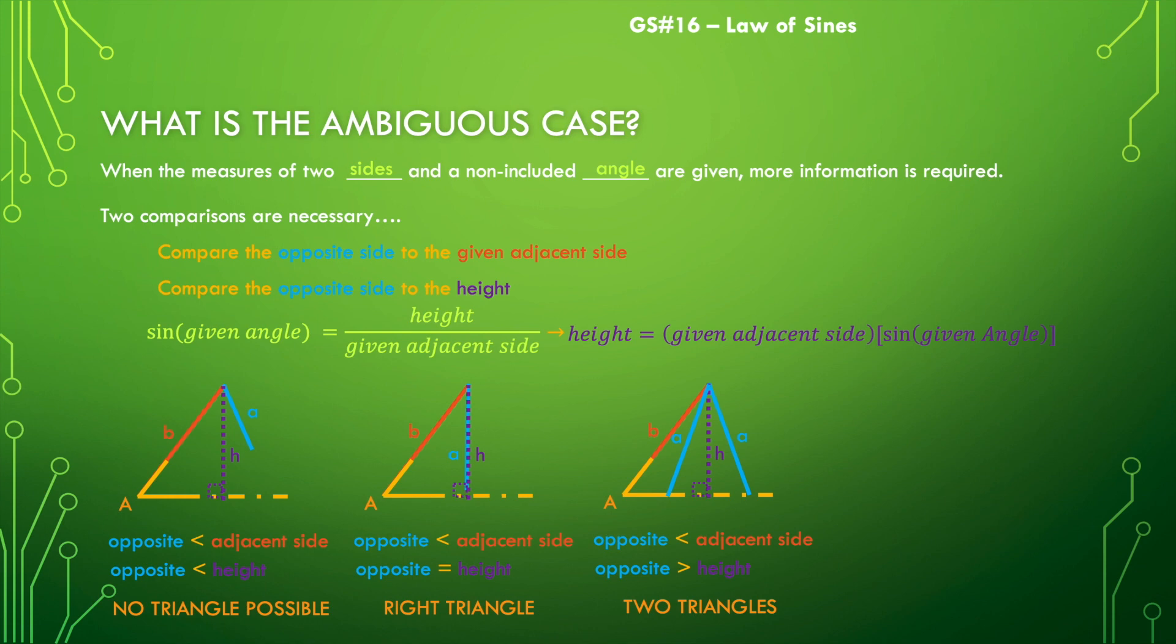And in our last example, we have our given angle, angle A. We've got our adjacent side, side B. We have our height. And then the last side, the opposite side to angle A will be larger or longer than the adjacent side. If that opposite side is greater than the adjacent side, it will obviously be greater than the height. And so there is only one possible triangle.